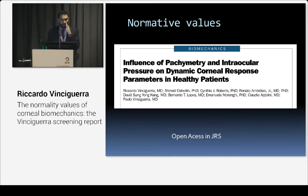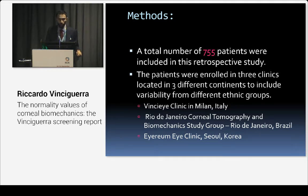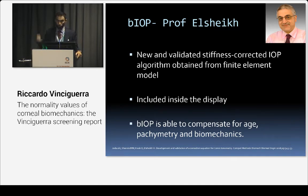The normative values have already been published in the Journal of Refractive Surgery in the last issue and it's open access, so you can download it for free. There were 755 patients from three different continents to include variability from different ethnic groups: from Italy in Europe, Rio de Janeiro in South America, and Korea in Asia. We have to acknowledge the valuable work of Professor El Sheikh, because without his BIOP we would never have been able to do this. The BIOP is already included in the display and is able to compensate for age, pachymetry, and biomechanics.